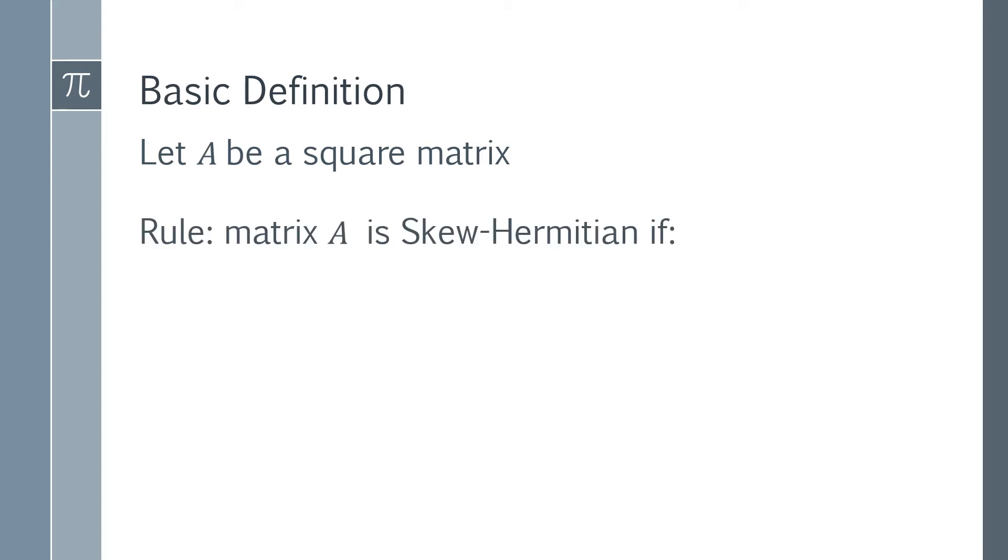The fundamental rule is that matrix A is skew-Hermitian if one criterion is satisfied: the conjugate transpose (bar means conjugate, T for transpose) equals the negative of matrix A. So A̅ᵀ = -A.